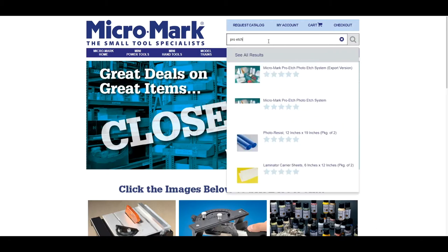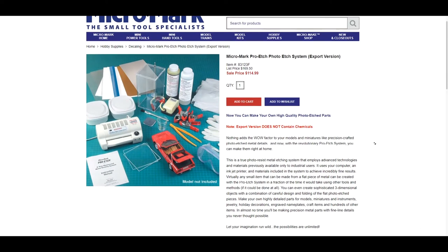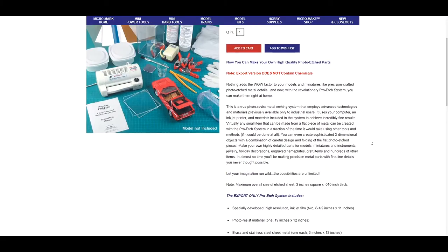For this tutorial I'll be using the photo etching kit from Micromark called the Pro Etch. It comes with everything required however if you live overseas you'll need to purchase the etching chemicals locally from your own country.